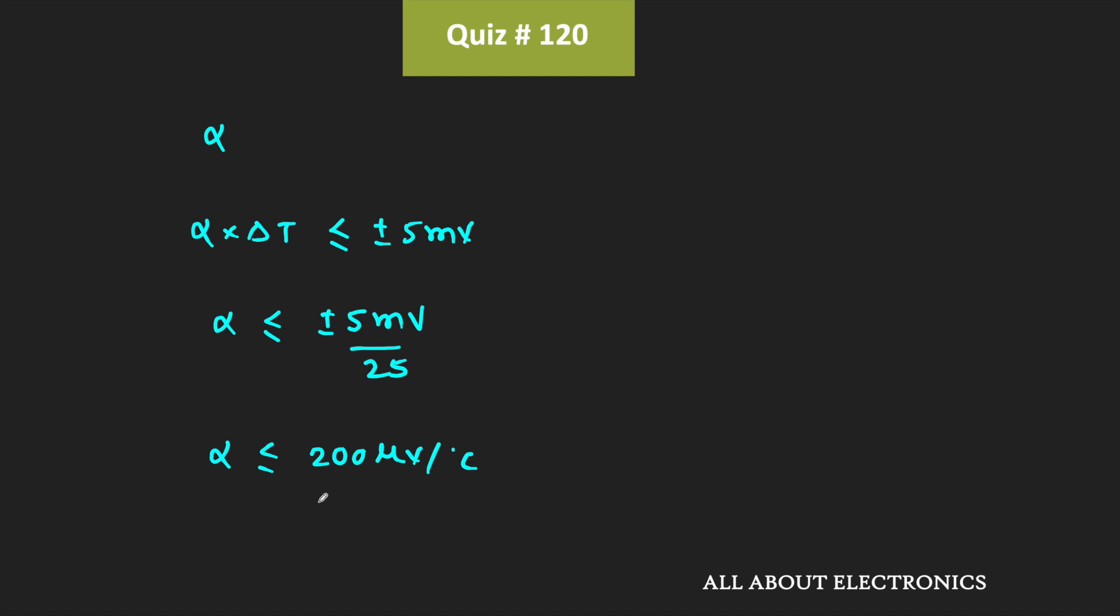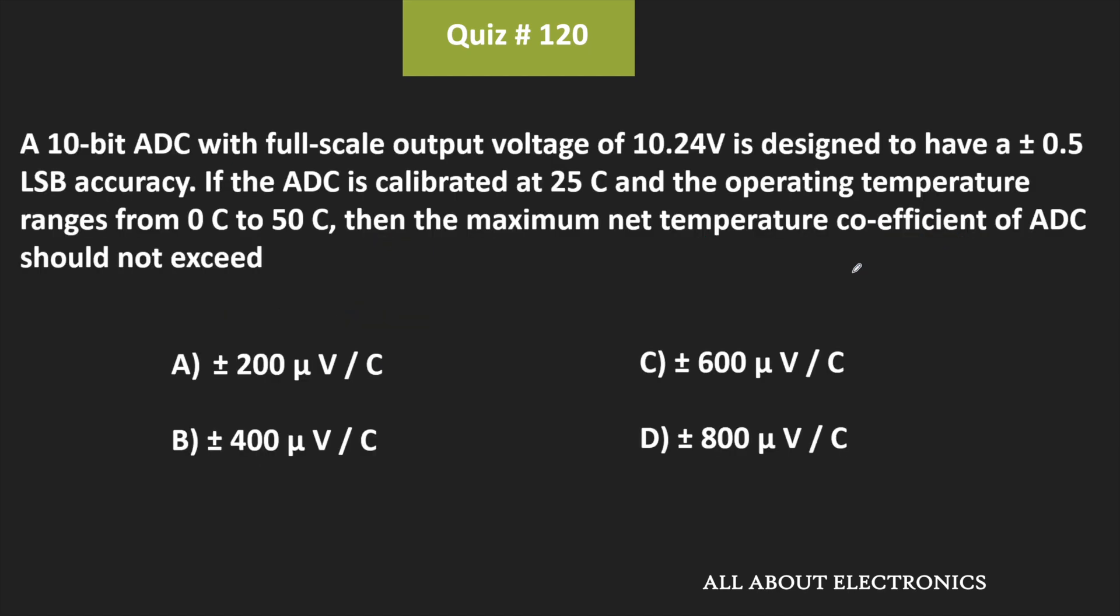That means the maximum allowable value of this temperature coefficient is equal to 200μV per degree centigrade. Or we can say that this αmax is equal to 200μV per degree centigrade. And from this, we can say that for the given question, this is the correct answer.